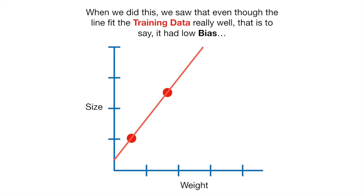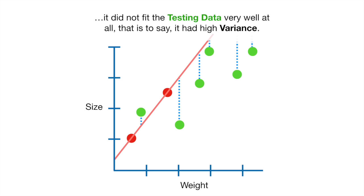When we did this, we saw that even though the line fit the training data really well, that is to say it had low bias, it did not fit the testing data very well at all, that is to say it had high variance.